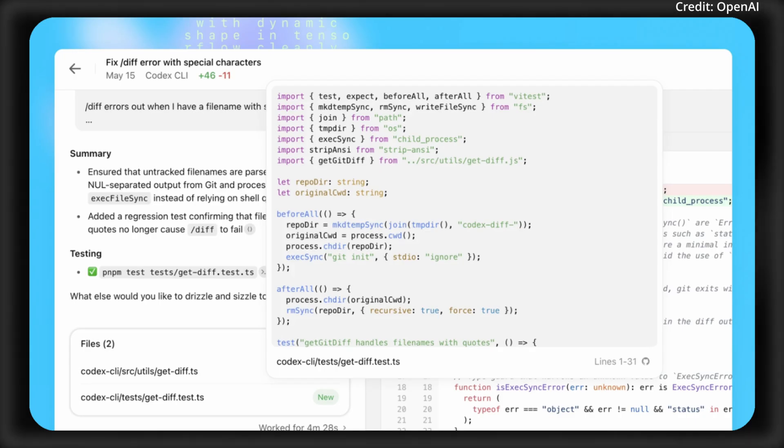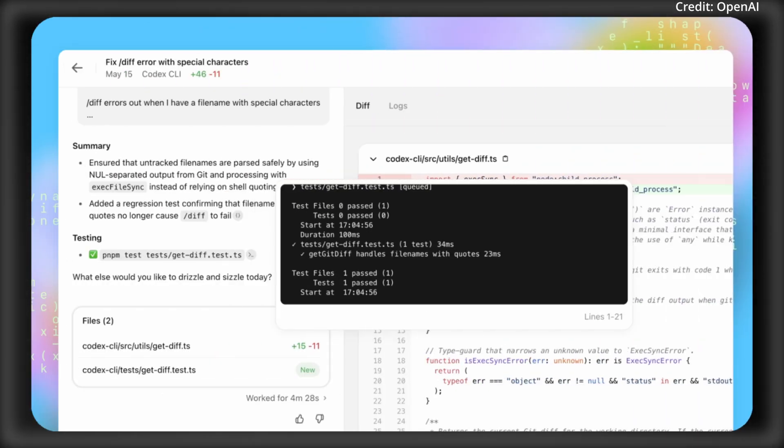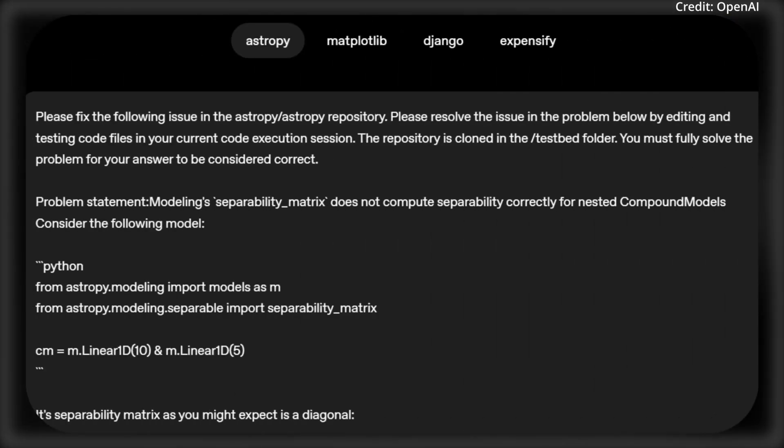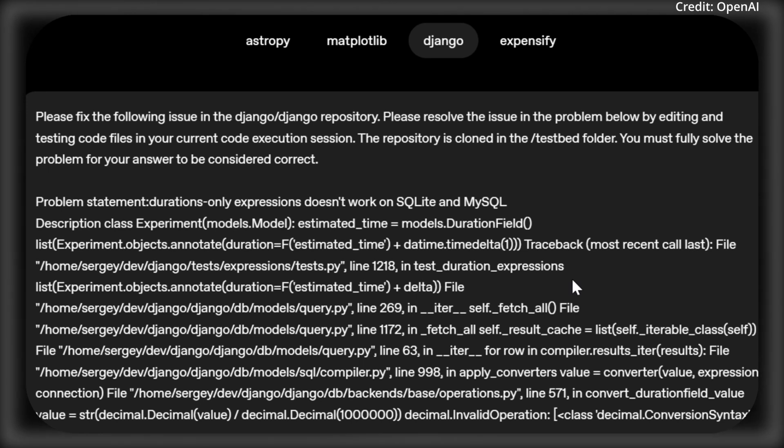Plus, Codex documents changes, supports agents.md files for project rules, and it's already being used by Cisco and SuperHuman. Plus, it's available right now to ChatGPT Pro users for free with pricing planned for other users in the near future.